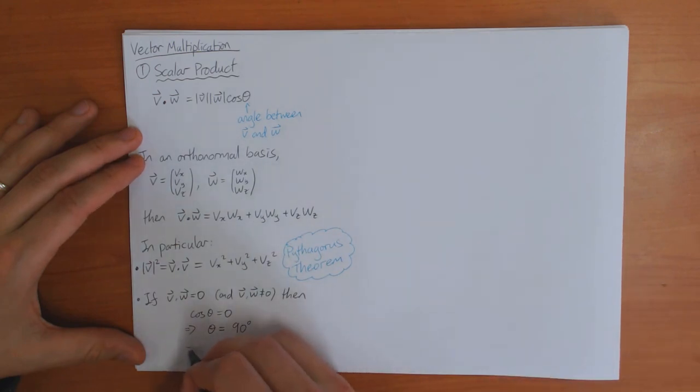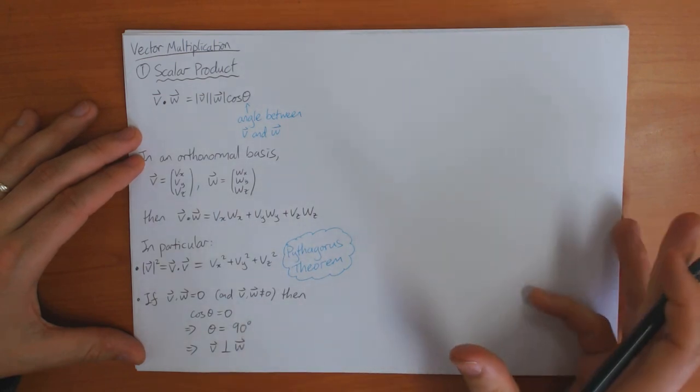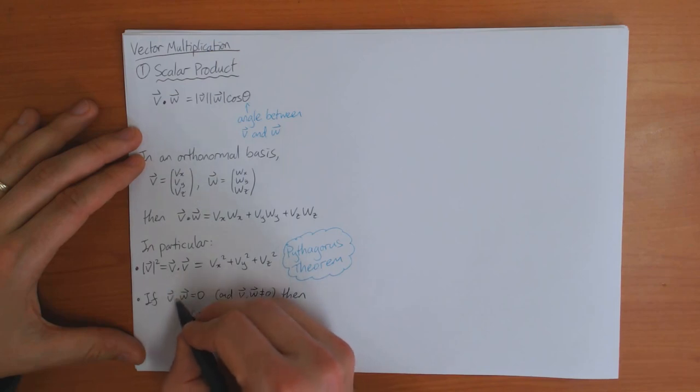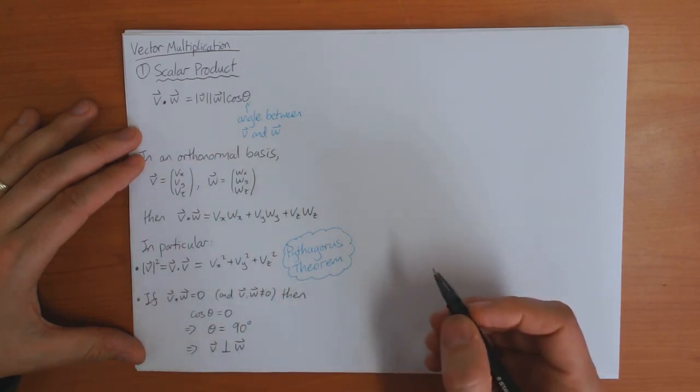In other words, that means that v is perpendicular to w. So a very easy way of checking if two vectors are perpendicular is to compute their scalar product and see if it's equal to zero.